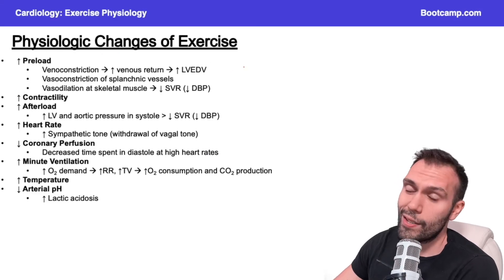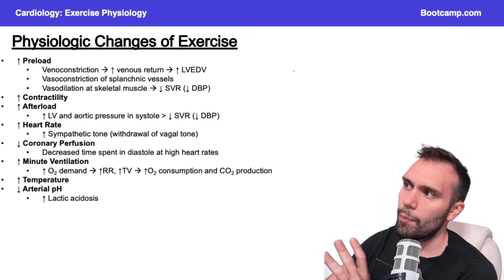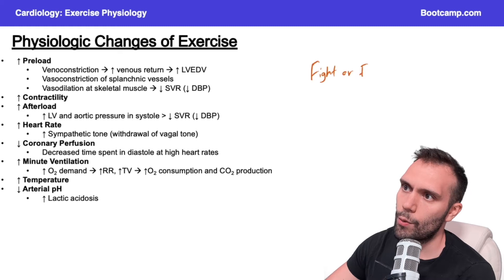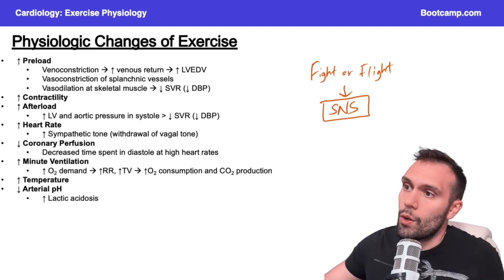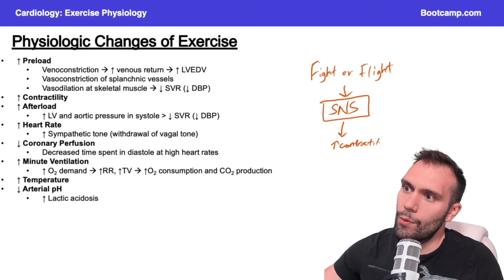Physiologic changes of exercise. This slide looks intimidating, but we're just going to simplify it. What's the simple way to remember what happens in exercise? Think about fight or flight — the sympathetic nervous system. If you can remember what the sympathetic nervous system is doing, you can answer a lot of these questions. The sympathetic nervous system is going to cause increases in contractility, for example, which is something we've already talked about. A lot of this is mediated by the beta receptors.